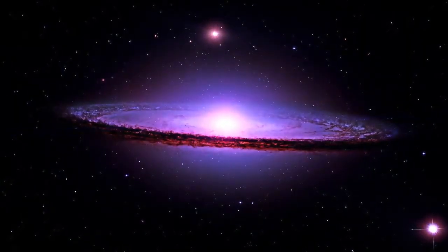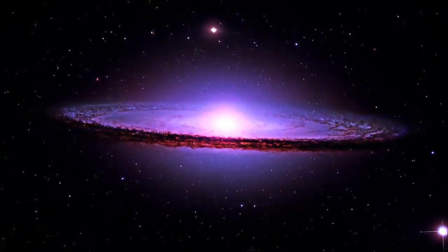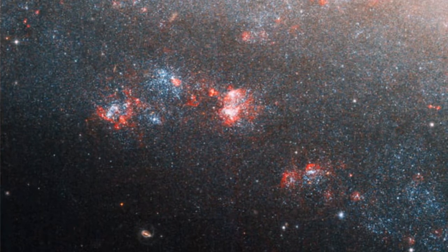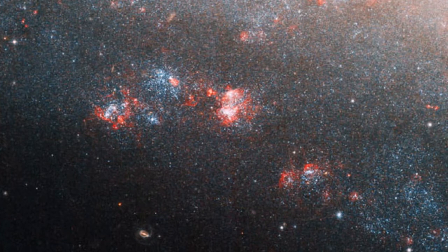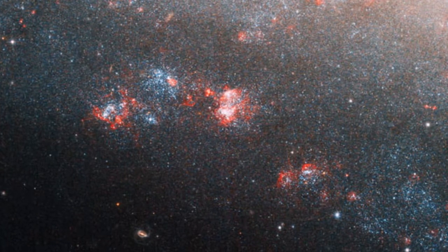NGC 247 is about 11.5 million light-years away in the southern constellation Cetus. This galaxy is also known as the Needles-Eye, the Claw Galaxy, Caldwell 62, ESO 540-22, LIDA 2758, and UGCA 11.